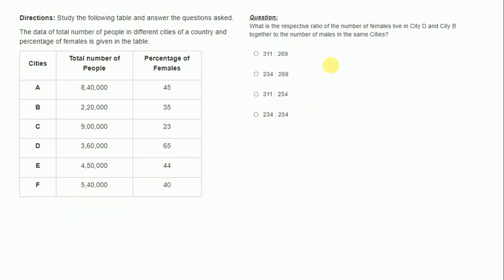What is the respective ratio of the number of females living in city D and city B together to the number of males in the same cities? We have to find the ratio of females to males in cities B and D.